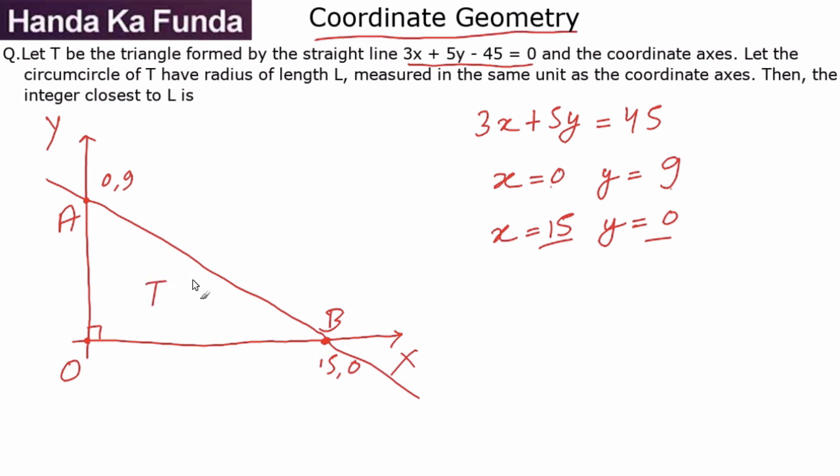Now let the circumcircle of T, of this triangle, have a radius of length L, which essentially means that the circumradius for this particular triangle is given to us as L, measured in the same unit as the coordinate axes. Then the integer closest to L is how much?